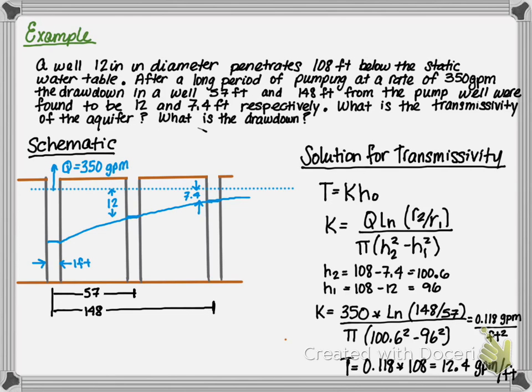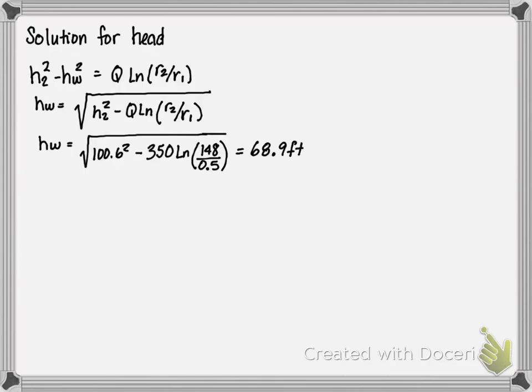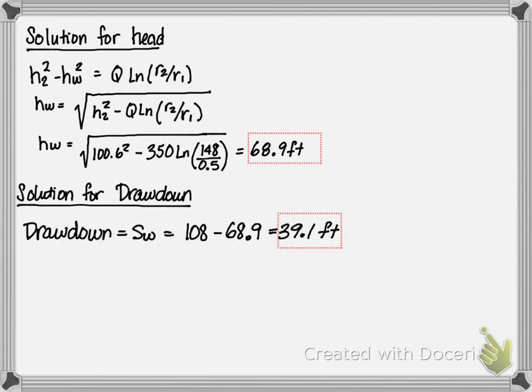Based on this information, we can now determine the solution for the water surface head. By rearranging the flow rate, we find that the head within the well is 68.9 feet, and the drawdown is 108 minus 68.9, which is 39.1 feet.